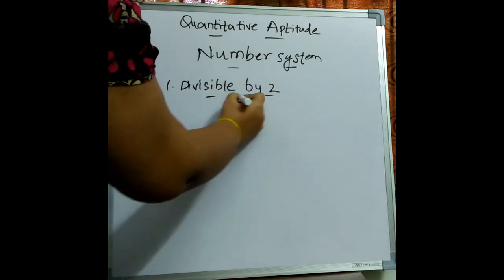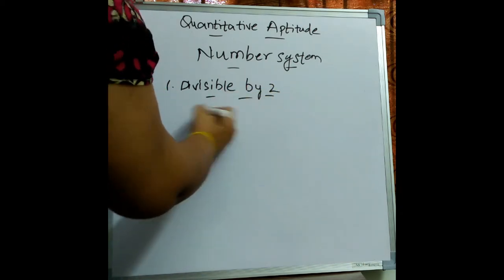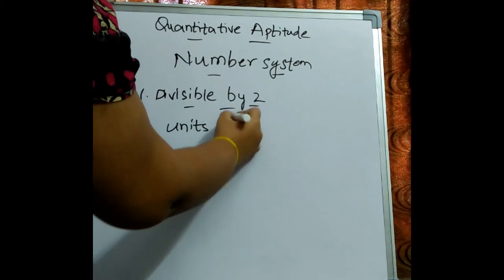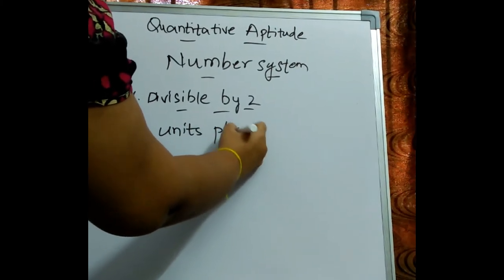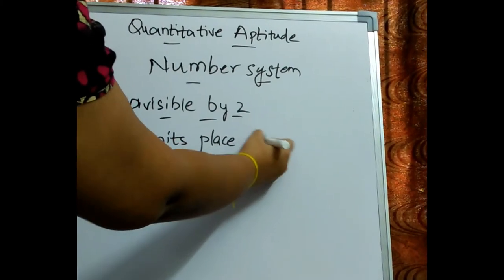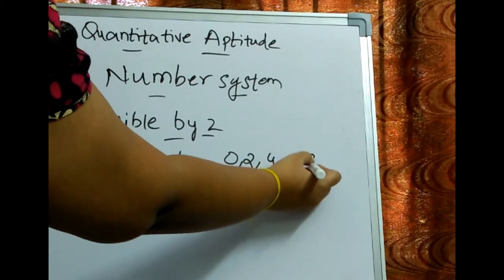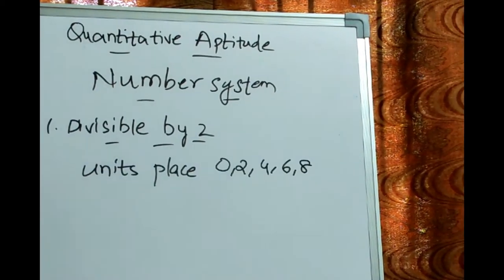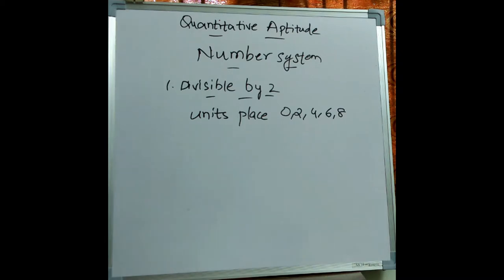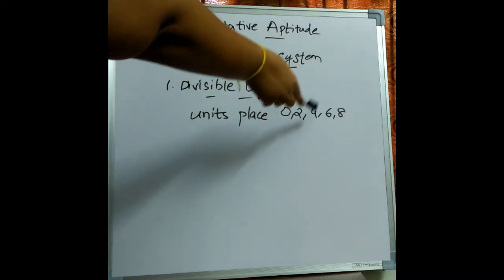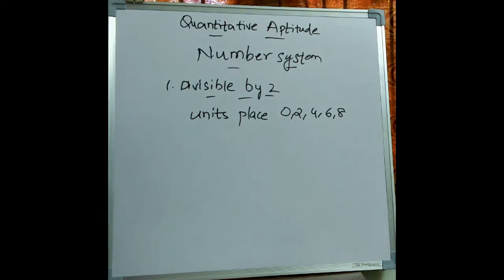In order to know the numbers which are divisible by 2, the number's units place should be having either 0, 2, 4, 6, or 8. If any number's units place is 0, 2, 4, 6, or 8, then the number will be divisible by 2.